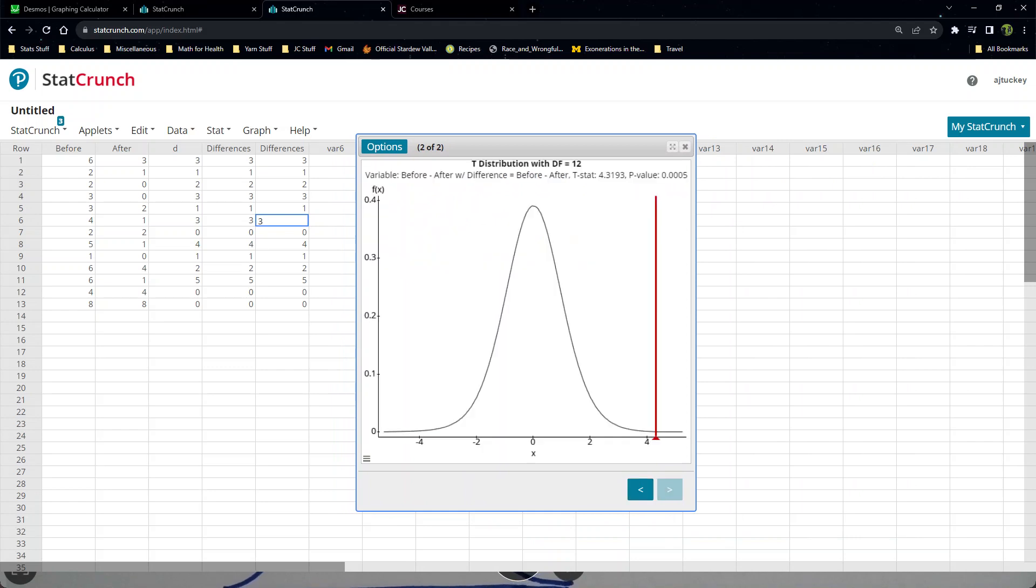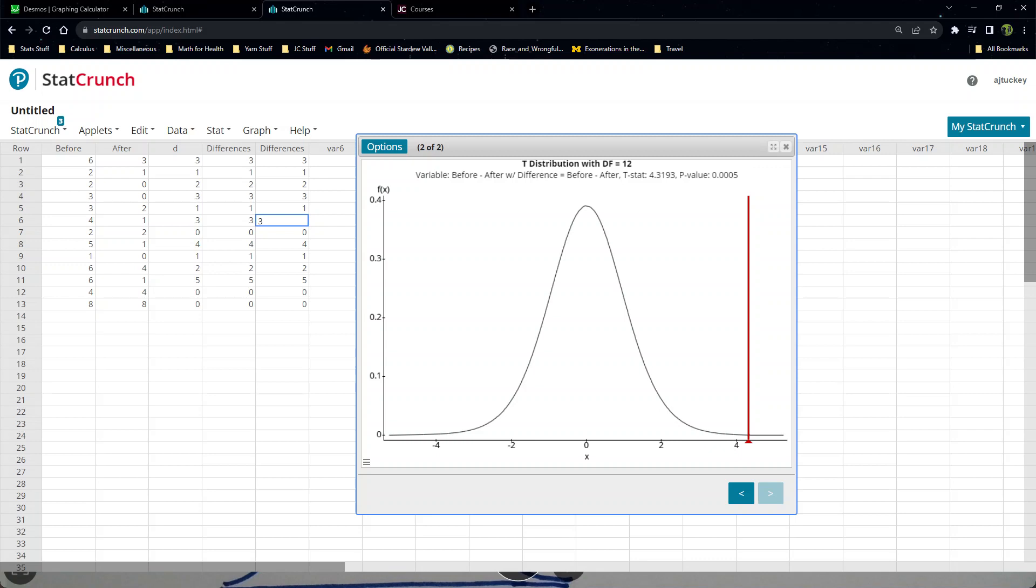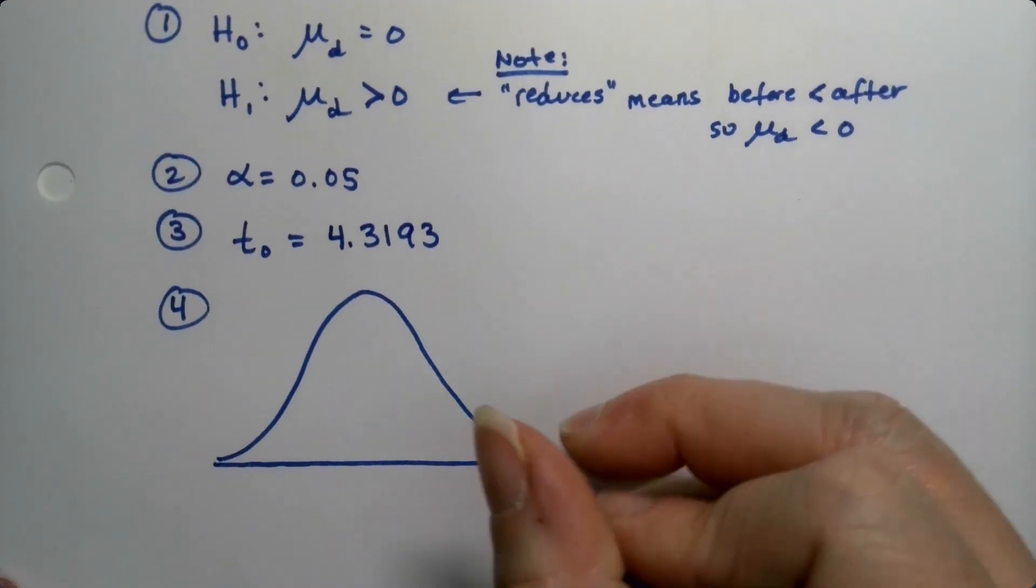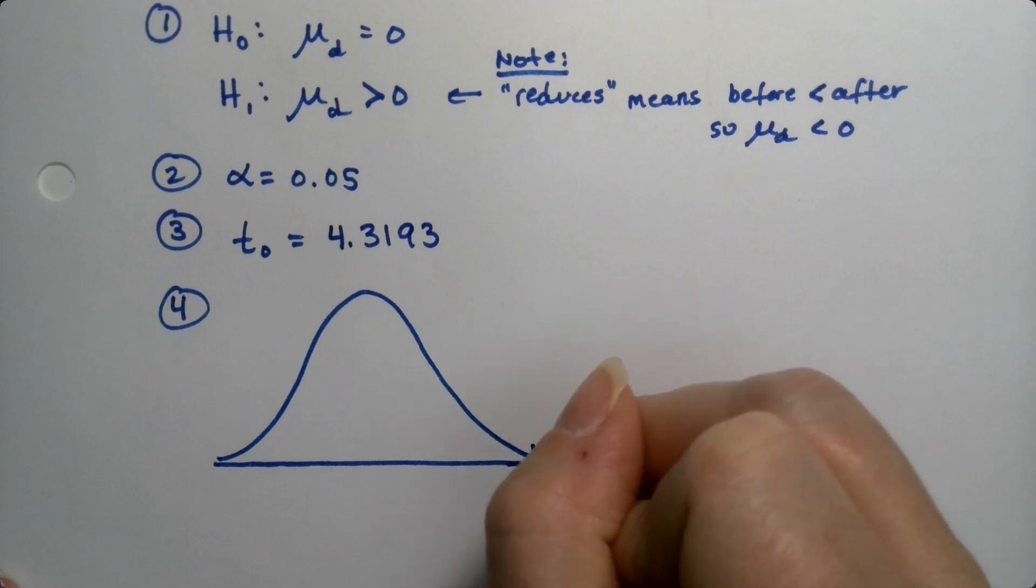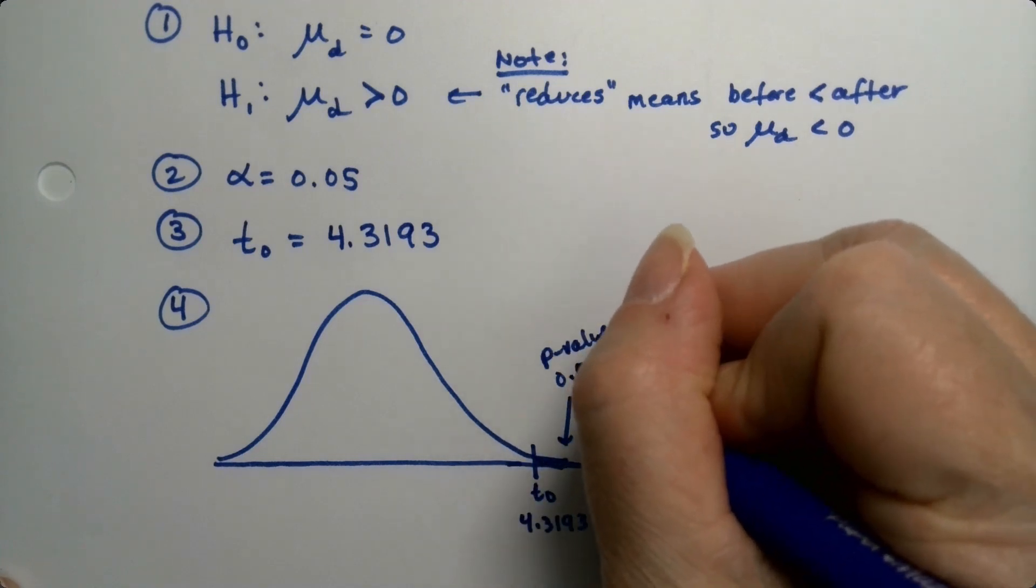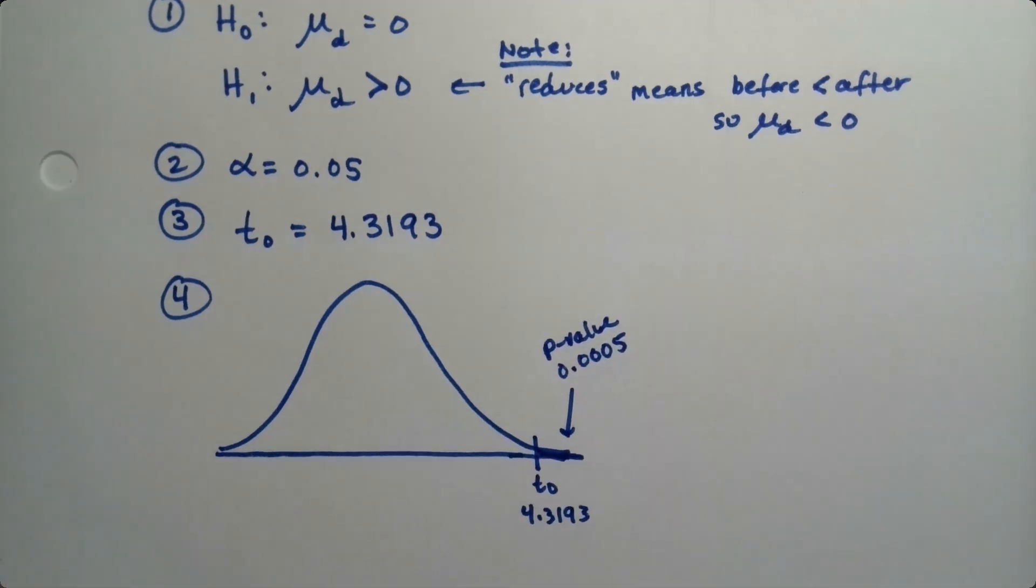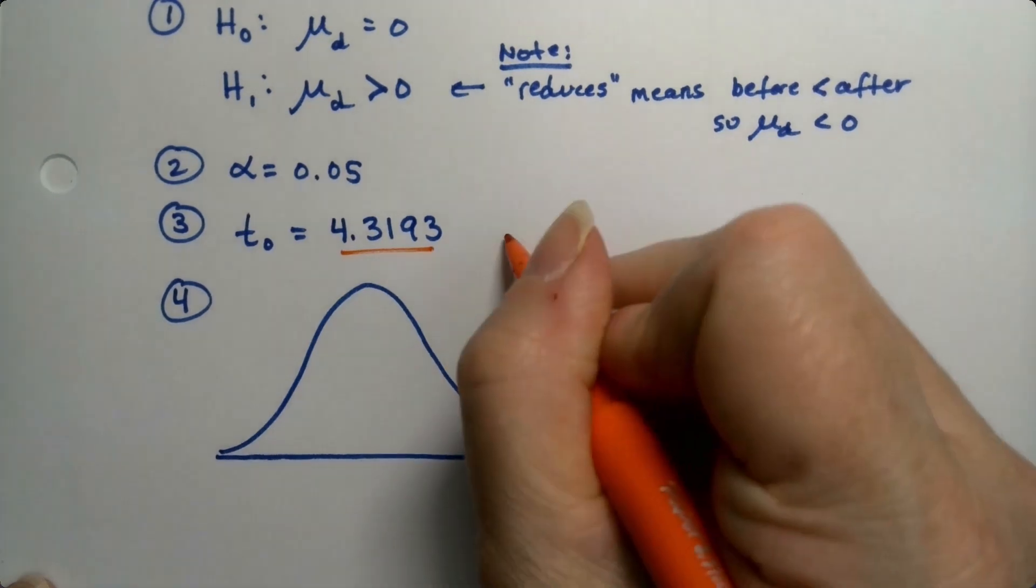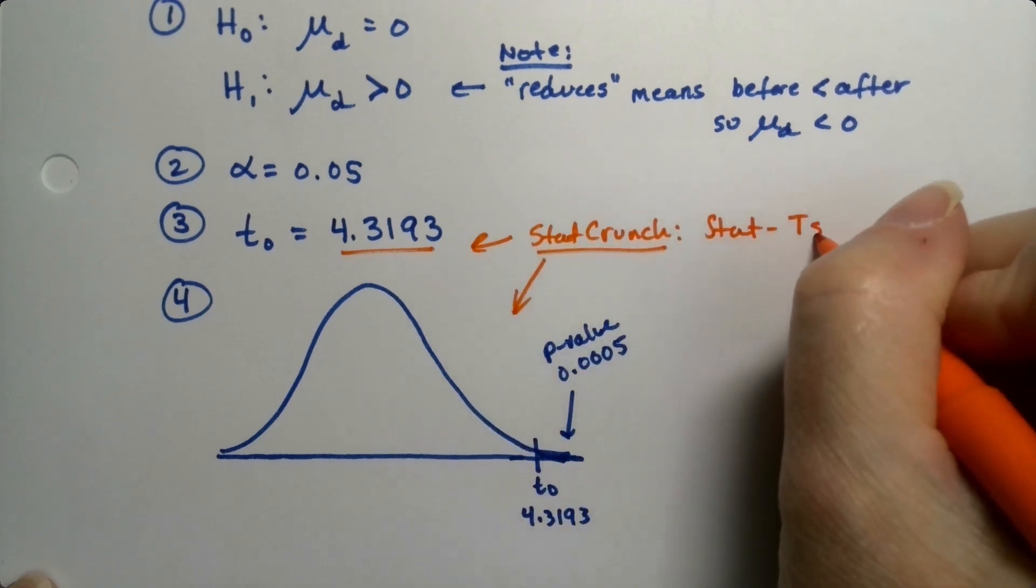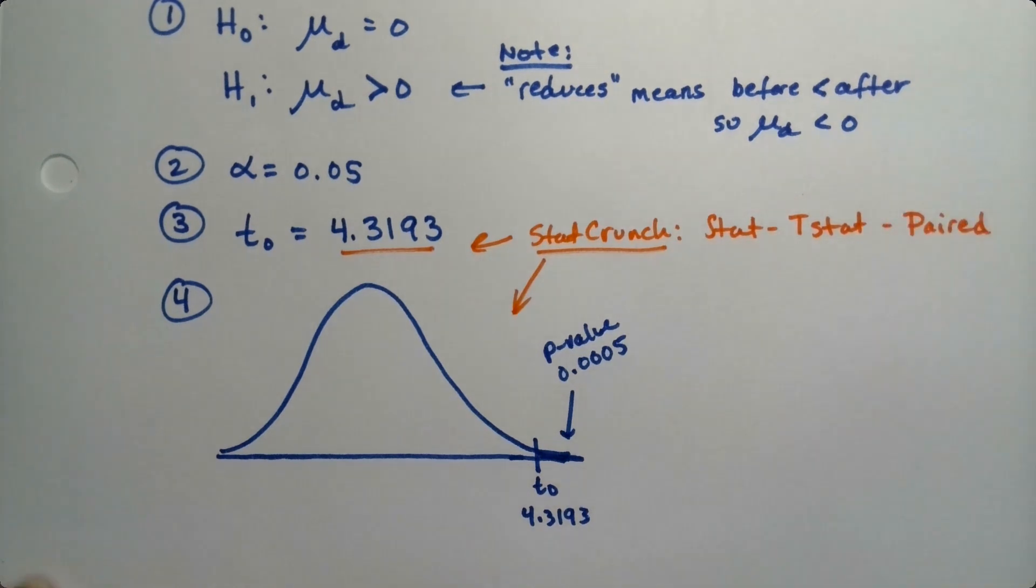Okay, honestly everything we need is on this page. But you might have to make it wider so you can read the values up at the top. So it tells us that our t-stat is 4.3193. That's step three. That's our t statistic. Let me write that down. 4.3193. And that's why I drew this. I knew where this was going. So I'm going to put t0 4.3193 right here. I'm going to shade that little bitty tail. And that p-value was 0.0005. So make little notes to ourselves that we got this and this from StatCrunch. It was stat, t-stat, paired.